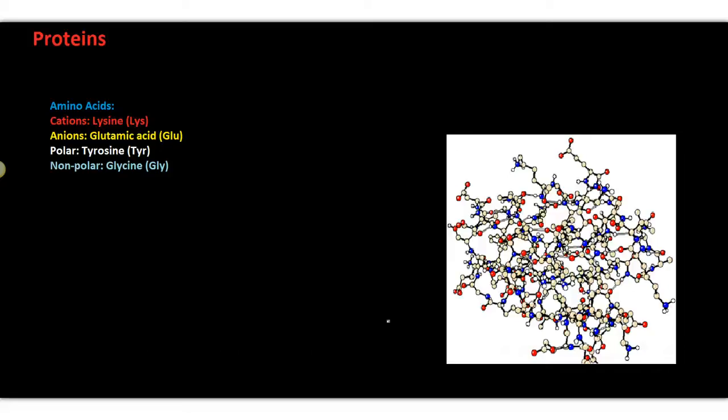One type of molecule that we see in abundance in the extracellular fluid and the cytoplasm within cells is proteins. Proteins are complex molecules that are made up of chains of amino acids.